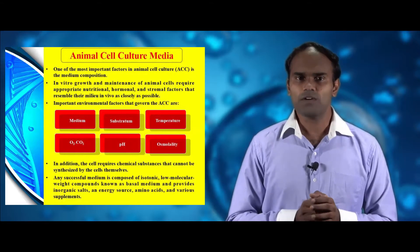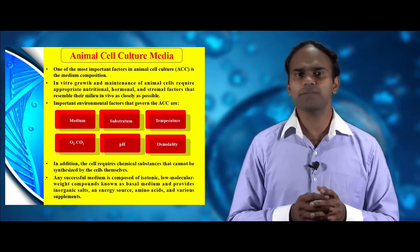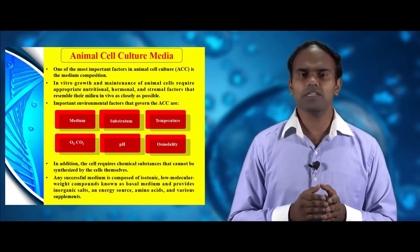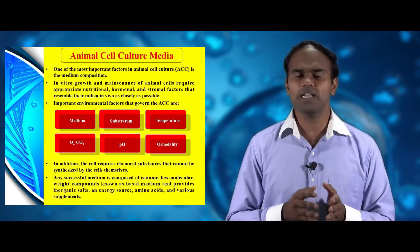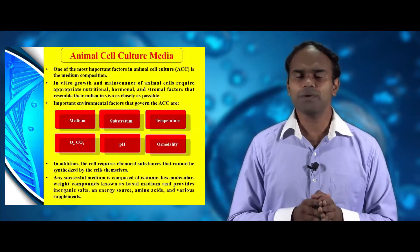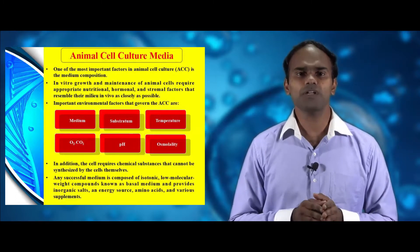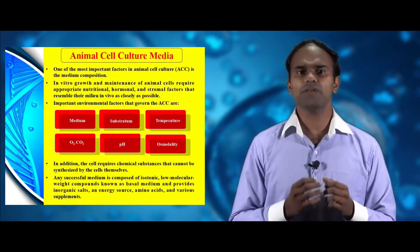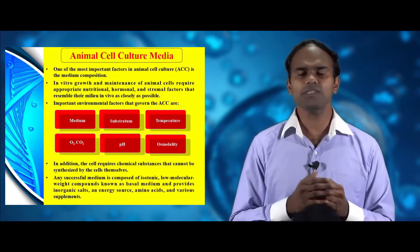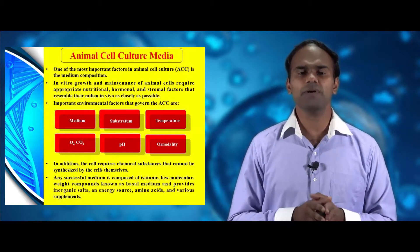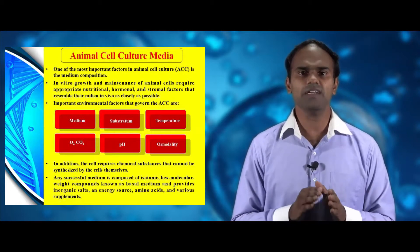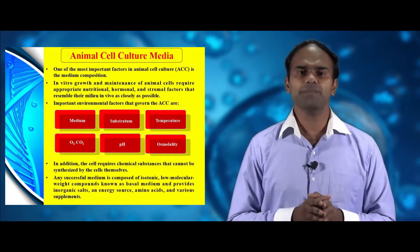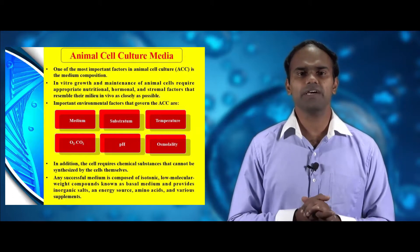One of the most important factors in animal cell culture is medium composition. In vitro cell growth and maintenance of animal cells require appropriate nutritional, hormonal and growth factors that resemble their in vivo environment as close as possible. Some of the important environmental factors that govern animal cell culture are media, substrate, temperature, oxygen and carbon dioxide.